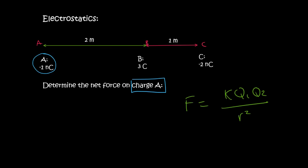So what we need to work out is how does B affect A. So let's do that first. So we can say FAB equals to K, which is 9 times 10 to the 9, multiplied by A's charge, which is 1 times 10 to the minus 9, multiplied by B's charge, which is 3. And the distance between them is 2 meters. That'll be 2 squared. And so we can work that out. And that gives us 6.75 Newtons. Now A is negative, and B is